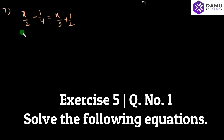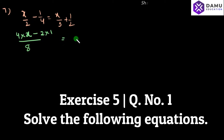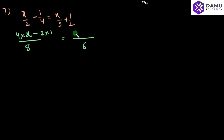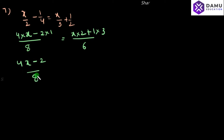So, take LCM of 2 and 4. LCM of 2 and 4 is 8. In order to multiply 4 with 2, we get 8. So 4 into x minus 2 into 1 on the left side. Take LCM of 3 and 2, that is 6. Least common multiple: x into 2 plus 1 into 3. 3 is 6, 2 is 6. So, 4x minus 2 by 8 will be equal to 2x plus 3 by 6.